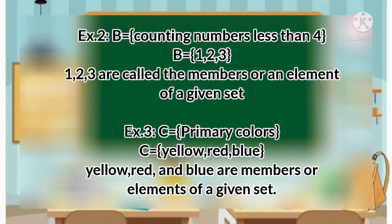Let's proceed to example number two: the set B, or the set of counting numbers less than four. We have the elements one, two, and three. So one, two, and three are called the members or elements of the given set. Example number three: a set C of primary colors. We have the elements yellow, red, and blue. So yellow, red, and blue are members or elements of the given set.